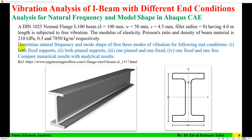The end conditions are: first, both ends fixed — that is a fixed beam; both ends pinned — that is a simply supported beam; one pinned and one fixed; and one fixed and one free — that is a cantilever beam. We will also compare the numerical results with analytical results.